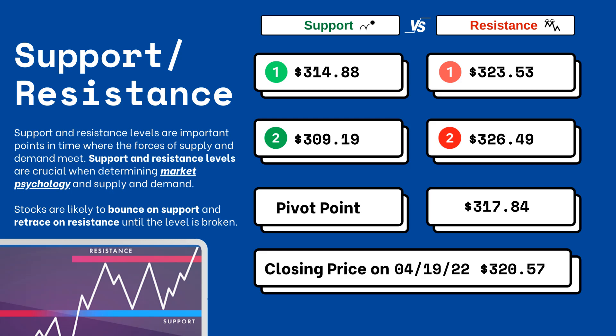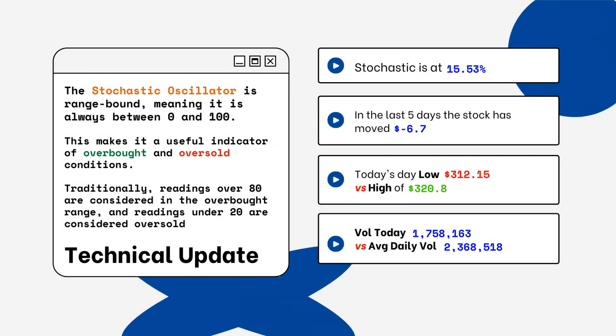These are areas that you want to watch when looking at this particular stock. Stocks typically bounce at support levels and they resist at resistance levels, meaning they'll retrace from that top level.